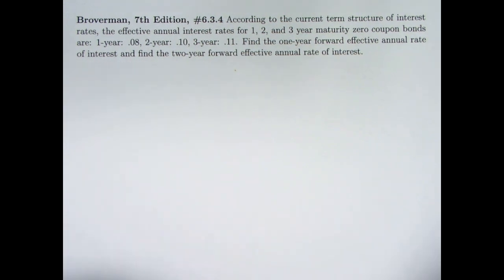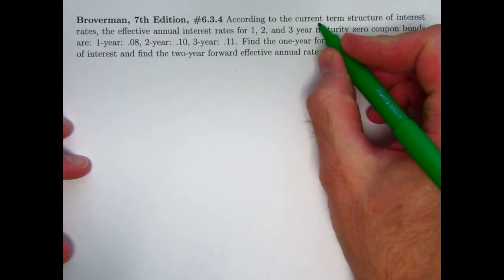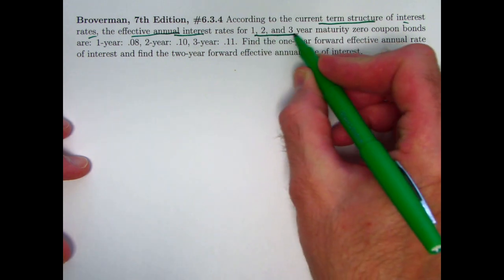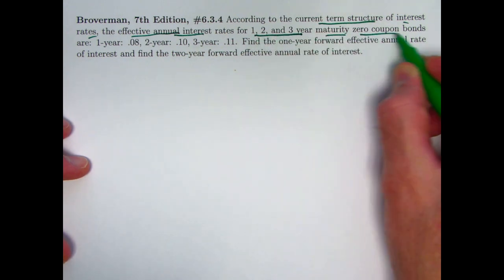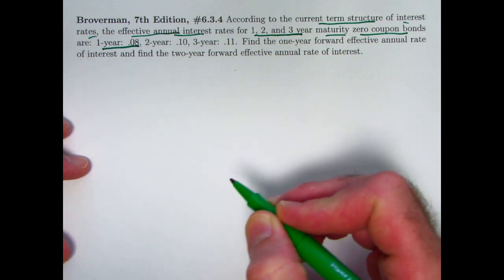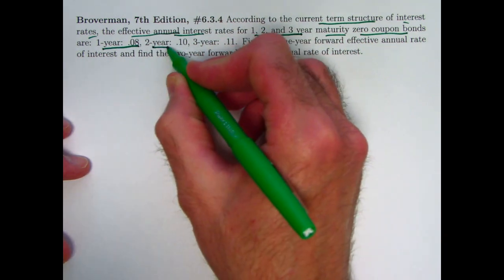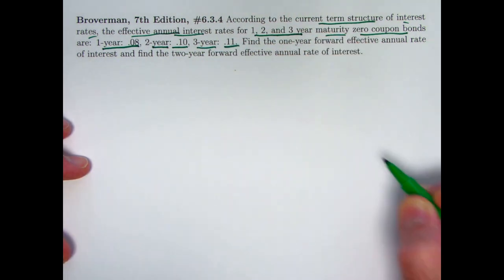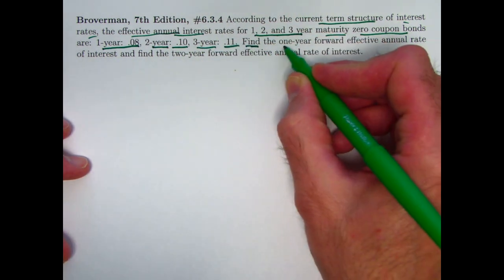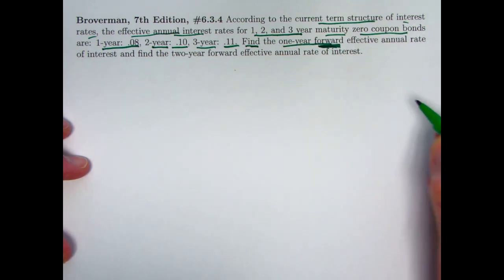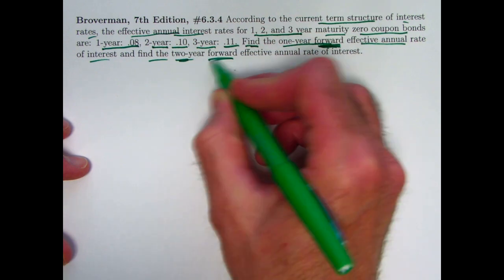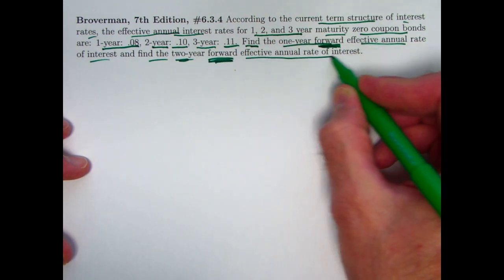Here's the problem statement. We've got a current term structure of interest rates for zero coupon bonds — effective annual interest rates for one, two, and three year maturity zero coupon bonds. For one year zero coupon bonds it's 8%, for two year zero coupon bonds it's 10%, and for three year zero coupon bonds it's 11%. The goal is to find the one year forward effective annual rate of interest, and the two year forward effective annual rate of interest.